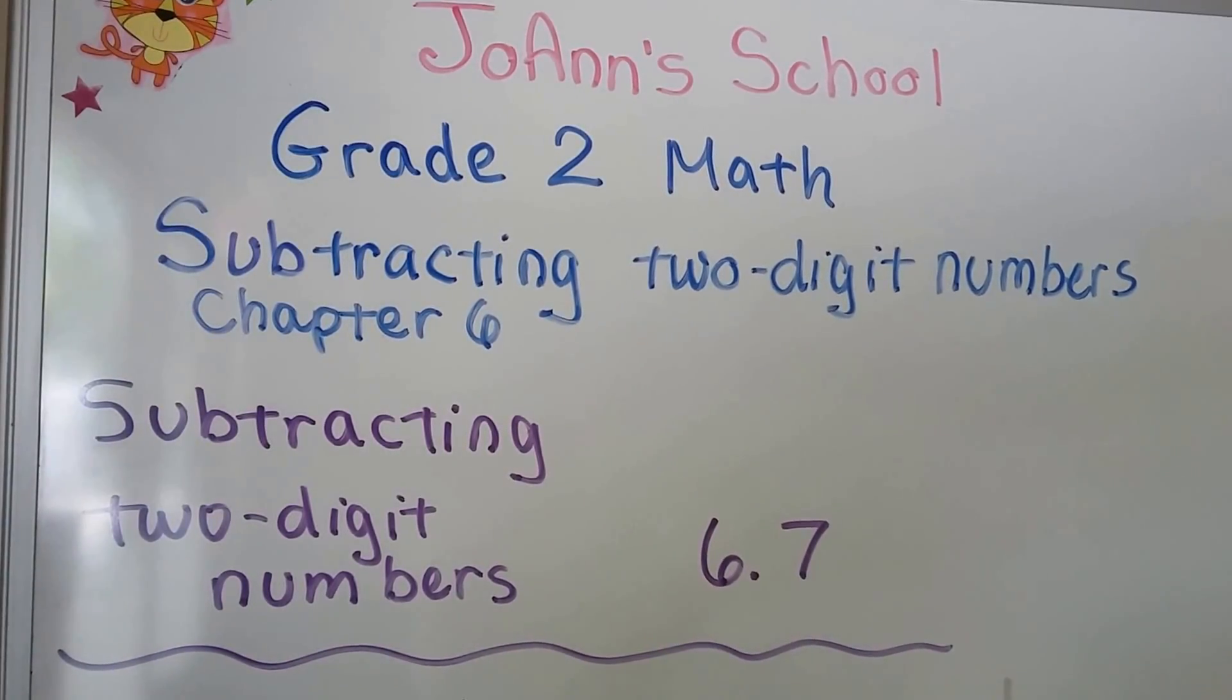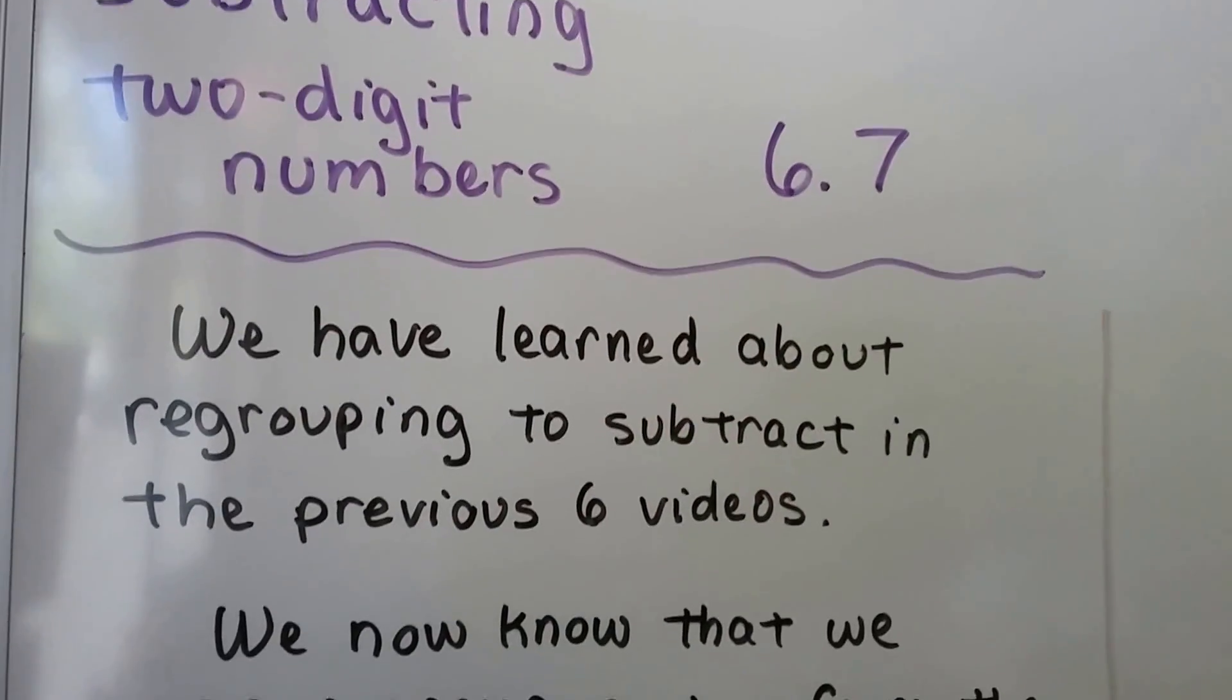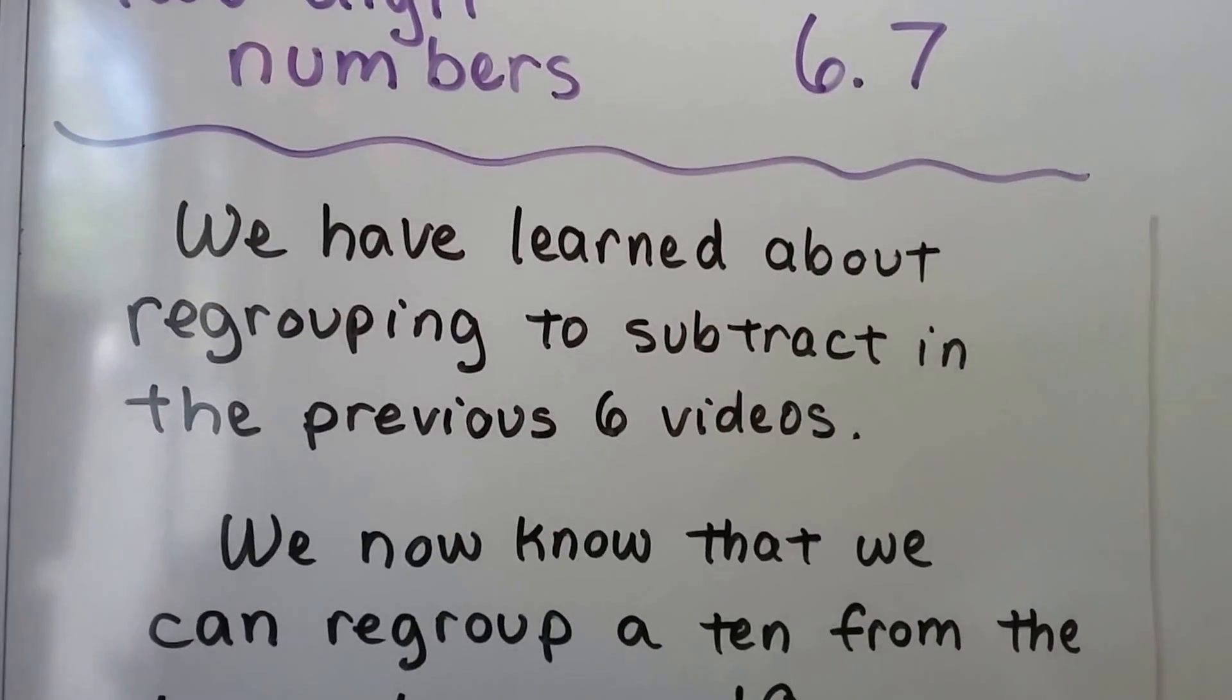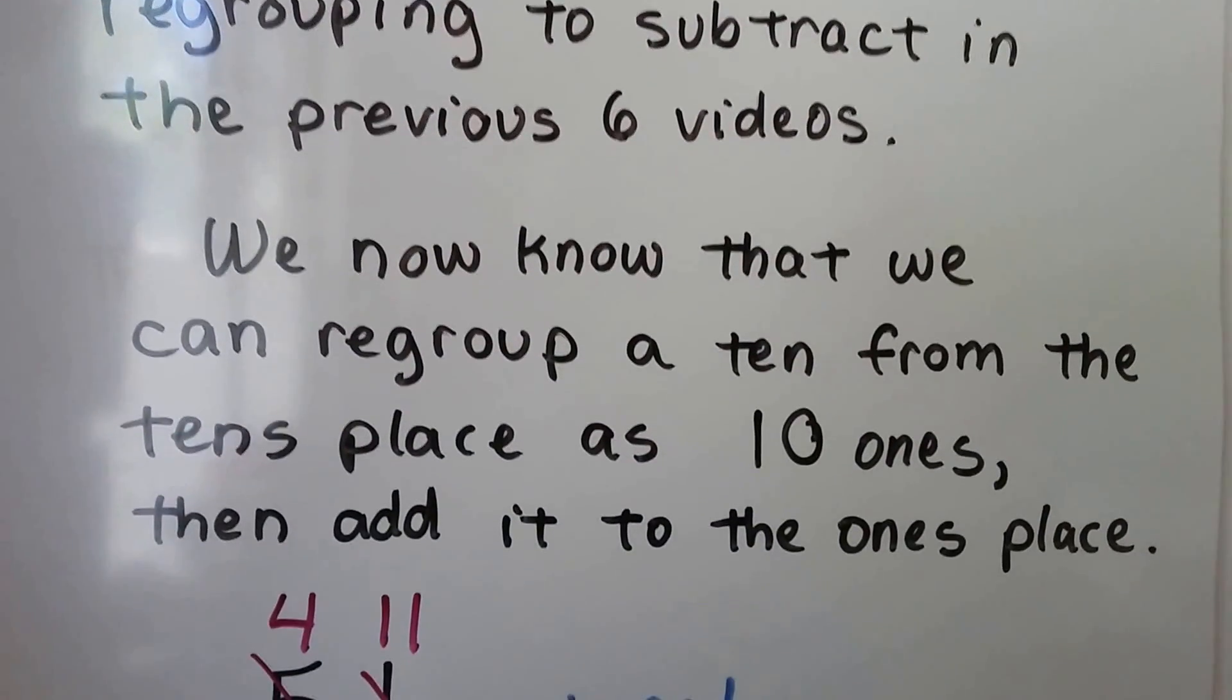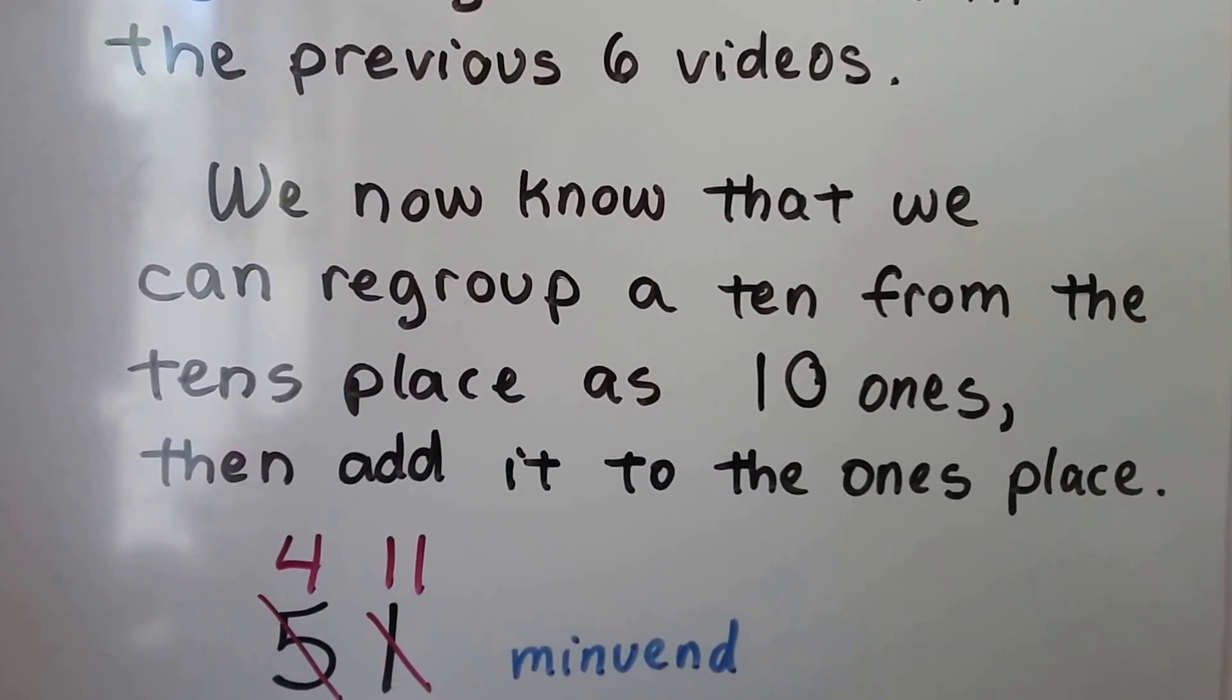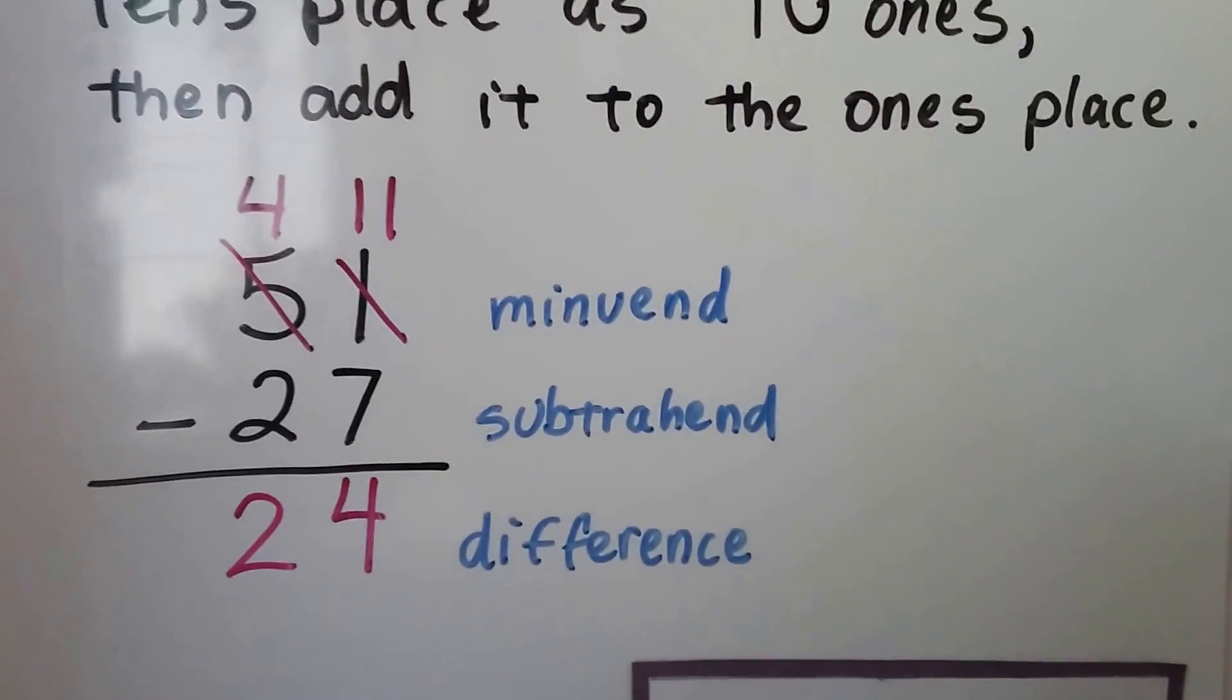Subtracting two-digit numbers, number 6.7. We have learned about regrouping to subtract in the previous six videos. We now know that we can regroup a 10 from the tens place as 10 ones and then add it to the ones place. Then we can subtract.